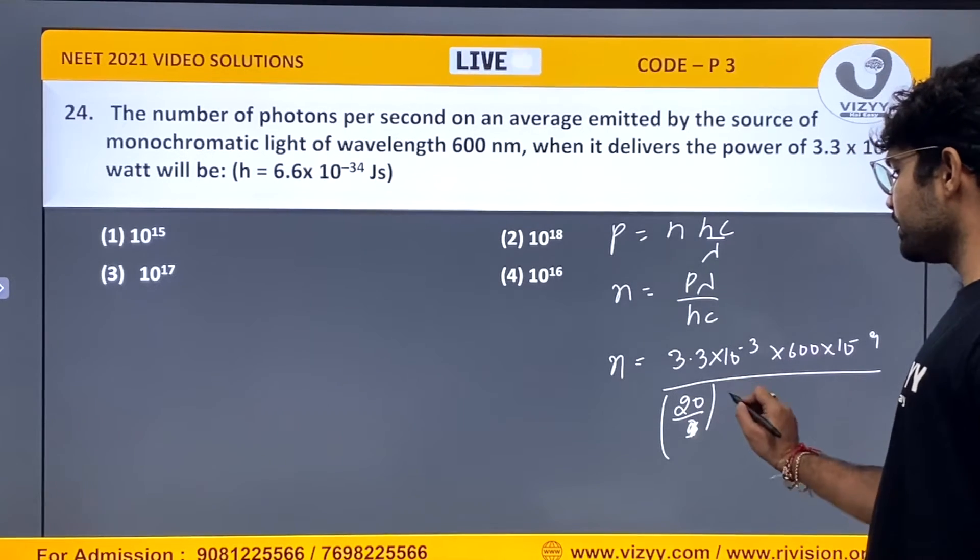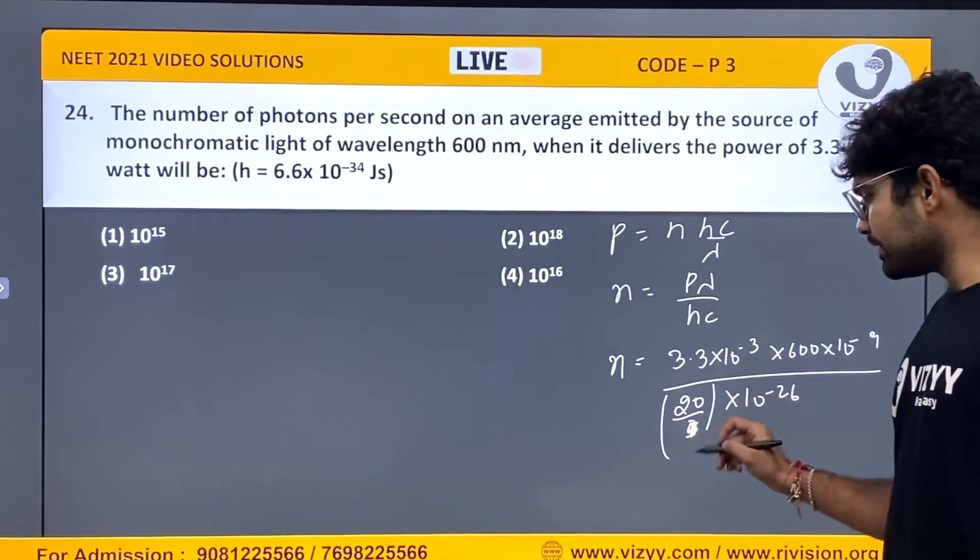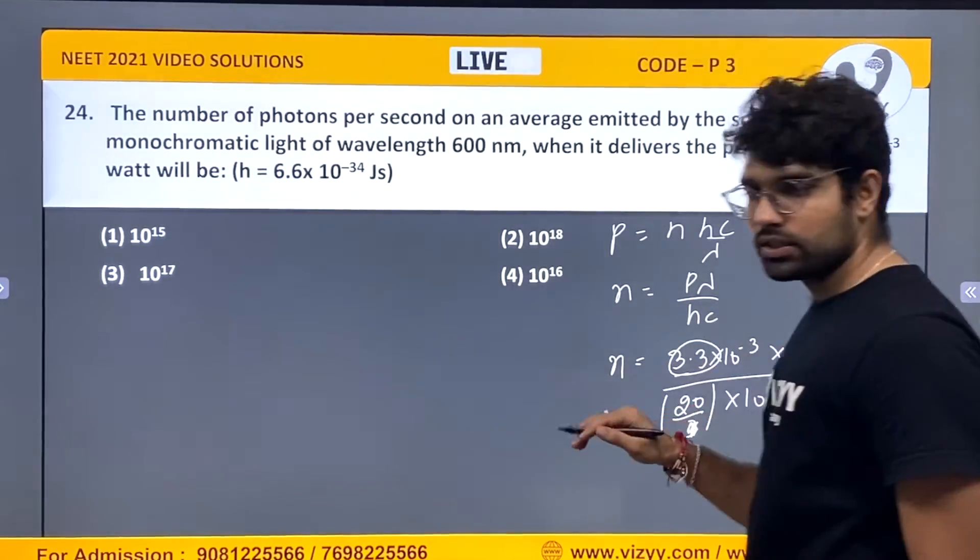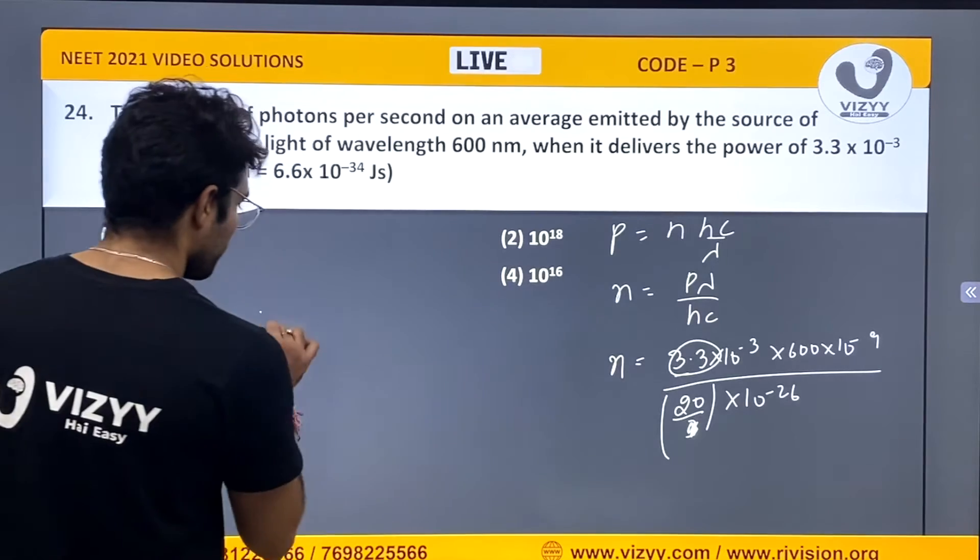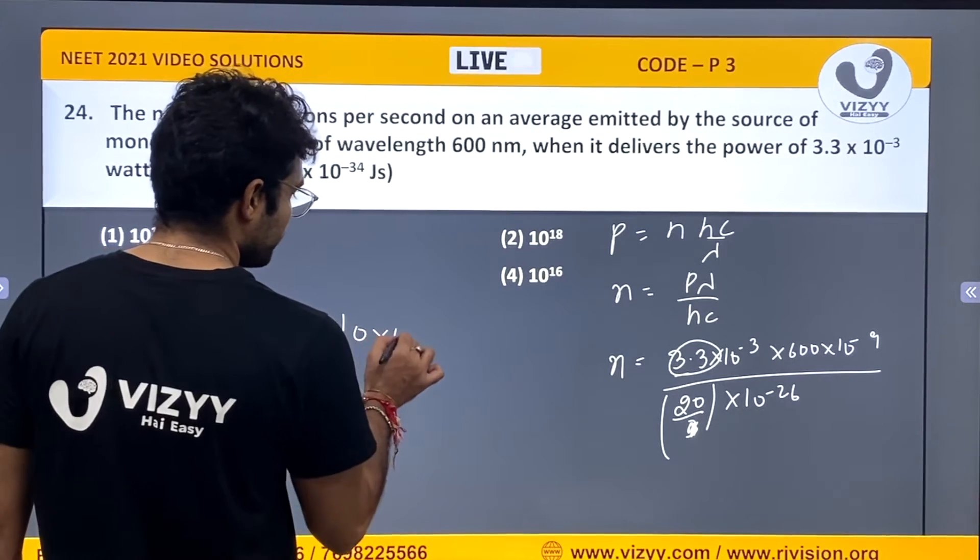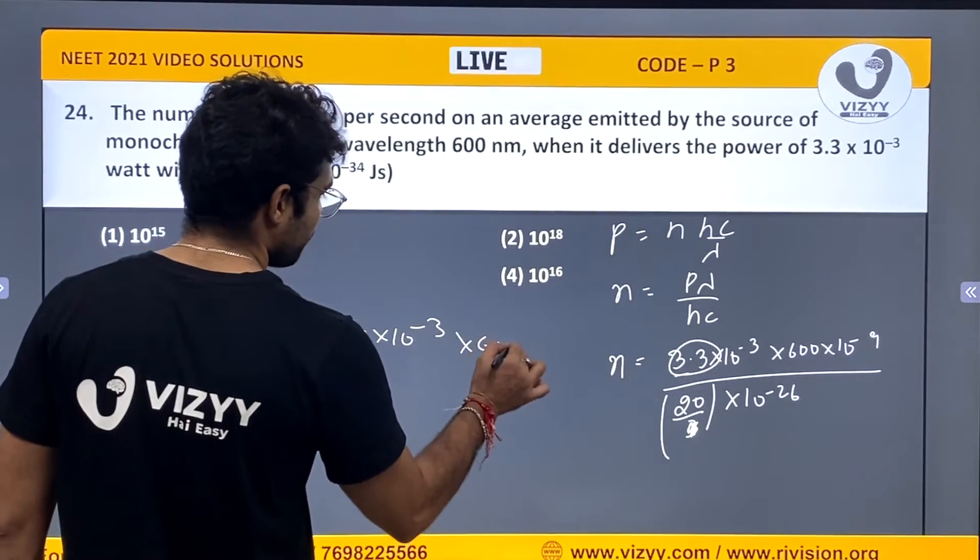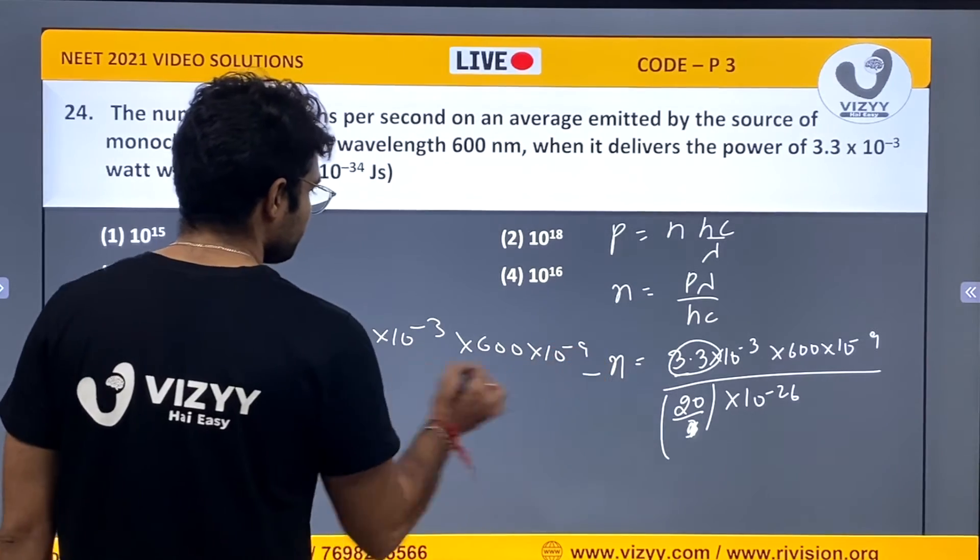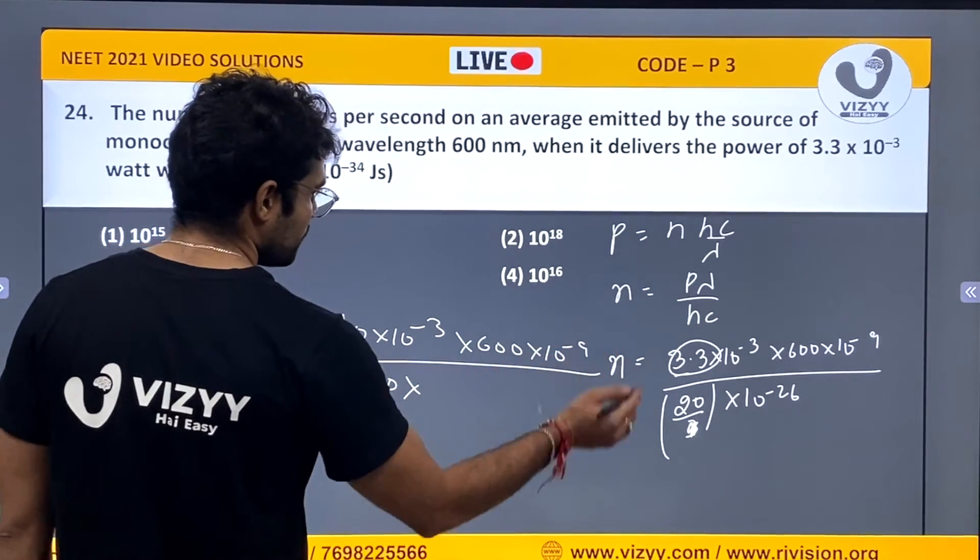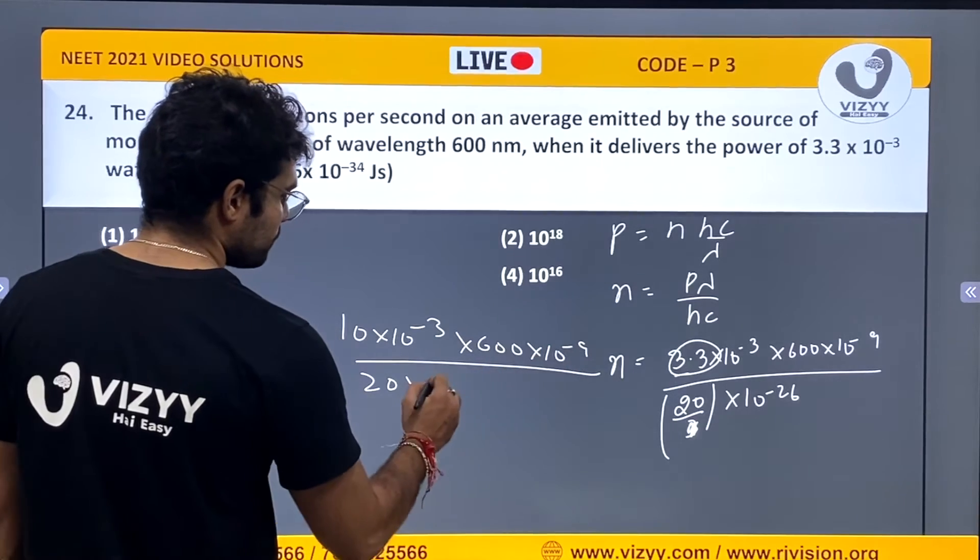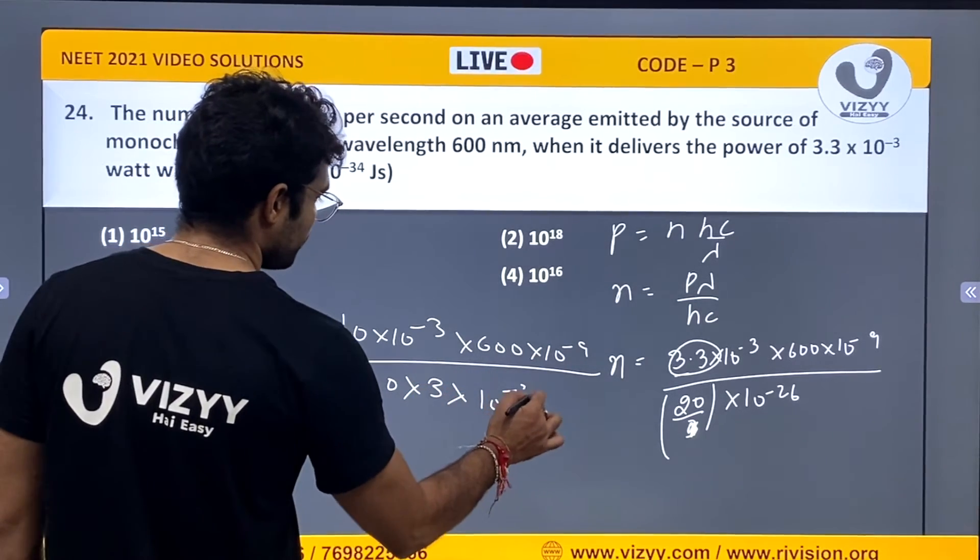20 into 10 to the power minus 26, hc divided by 20 by 3. And this I am writing as 10 by 3. Easy calculation. So n equals 10 into 10 to the power minus 3 into 600 into 10 to the power minus 9 divided by 20 into 10 by 3, this is 3 and 10 to the power minus 26.